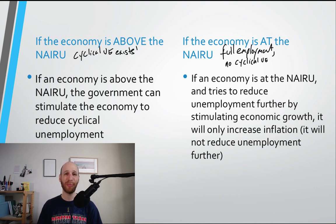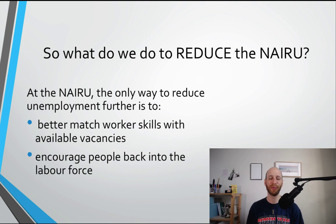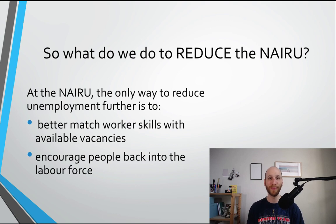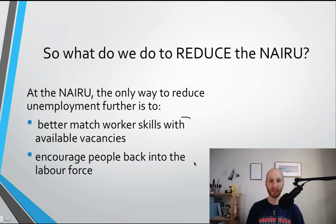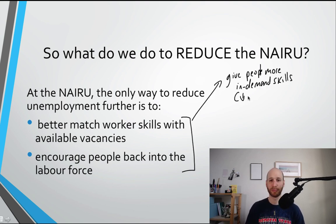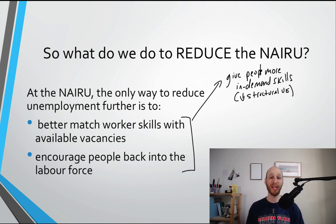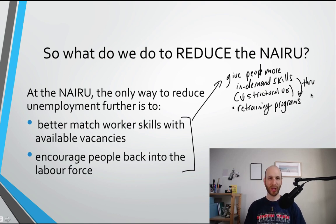At the NAIRU, speeding up the economy is not going to reduce unemployment any further. So what do we do to reduce the NAIRU? The only way to reduce unemployment further is to address those other types of unemployment — structural, frictional, long-term. If we can better match worker skills with available vacancies, or encourage people back into the workforce, or do a combination of these — if we can give workers more in-demand skills, retrain them and give them the skills the economy needs, that could reduce structural unemployment. These are the kind of strategies we could use to reduce the NAIRU if we are at that level.